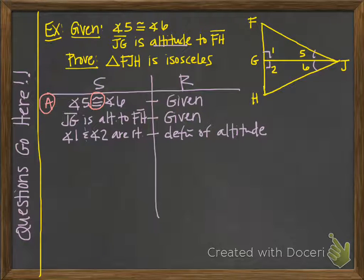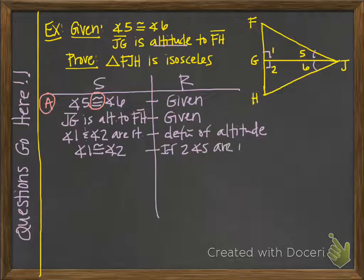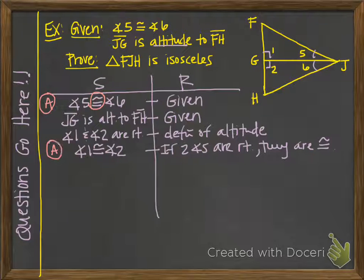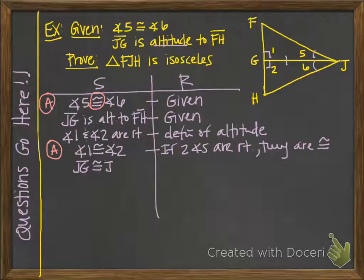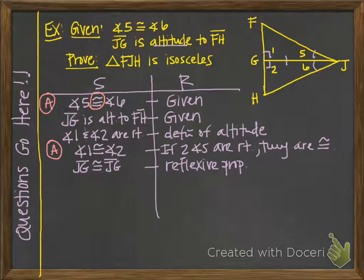Now that we've stated that angles 1 and 2 are both right angles, we can say they are congruent — because if two angles are right, they are congruent. This gives us a second A. With two A's established, we need to prove that the side between them is congruent. Both triangles share GJ, so we can say GJ is congruent to itself by the reflexive property. That gives us our S.